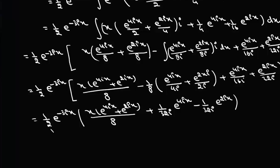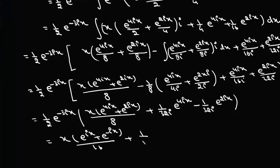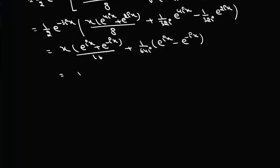Now multiplying (1/2)·e^(−3ix) inside: x·(e^(ix) + e^(−ix))/16 + (1/64i)·e^(ix) − e^(−ix). Since e^(ix) + e^(−ix) = 2·cos(x), this becomes x·cos(x)/8, and since e^(ix) − e^(−ix) = 2i·sin(x), this gives (1/32)·sin(x). So yp = x·cos(x)/8 + (1/32)·sin(x).